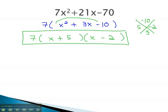This expression is now factored. Let's take a look at another example, where we factor out the greatest common factor first, and then factor using the AC method from there.